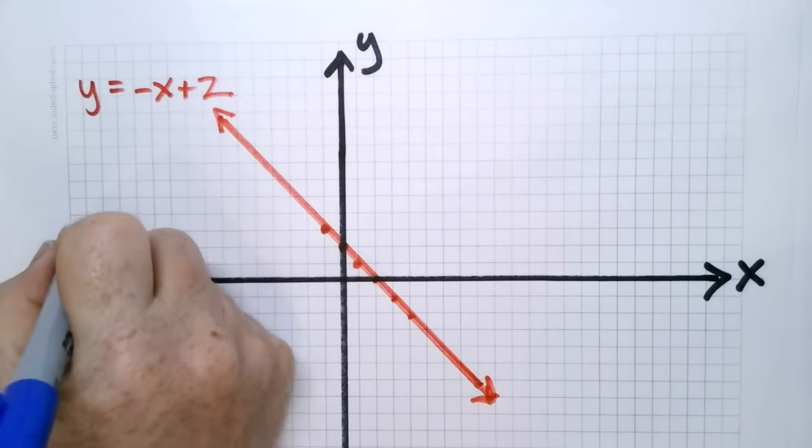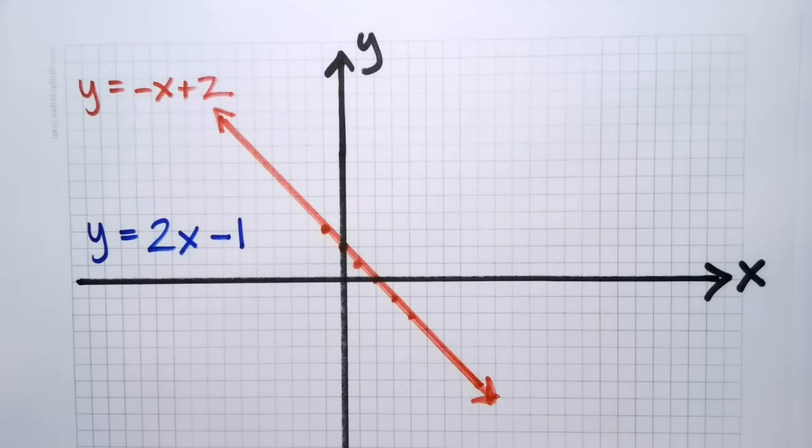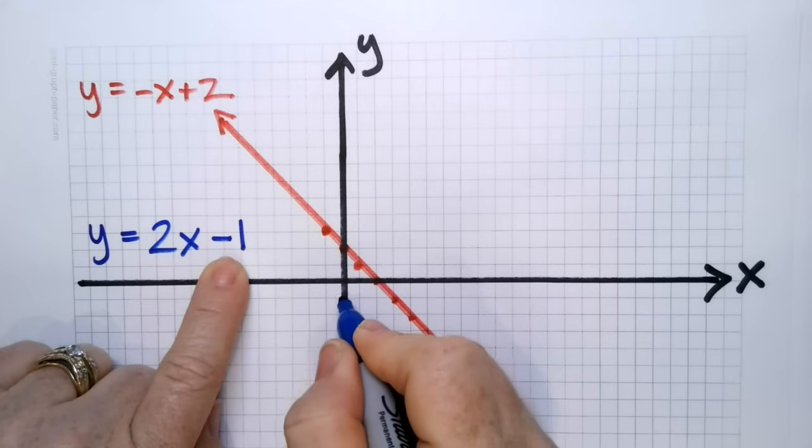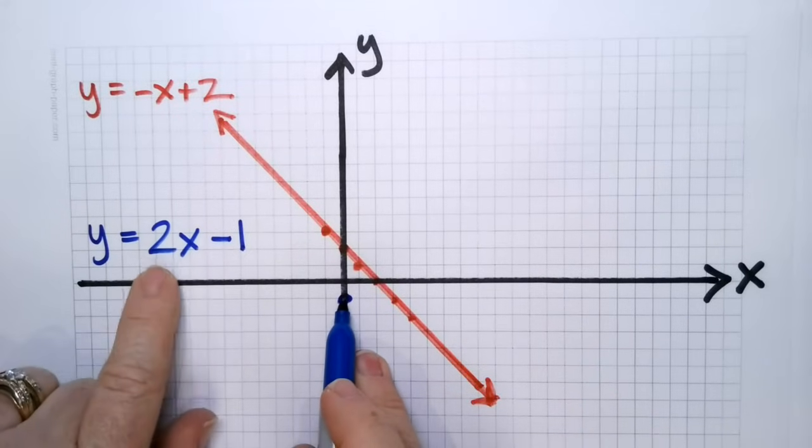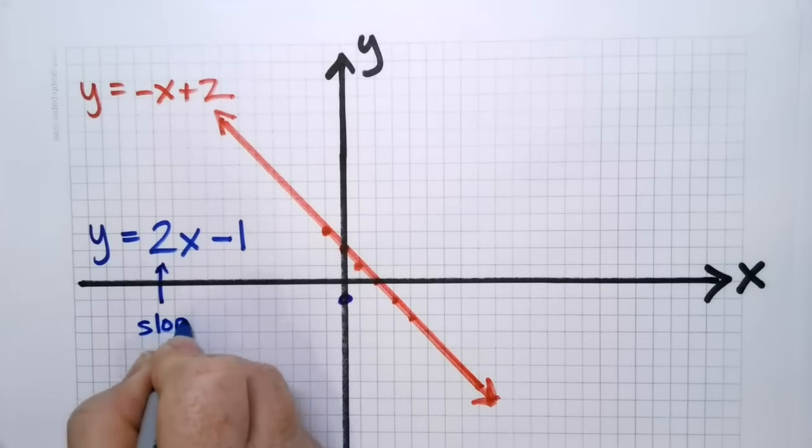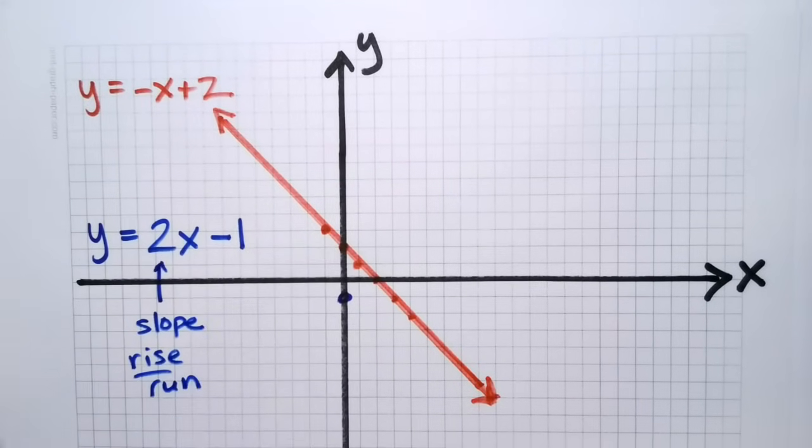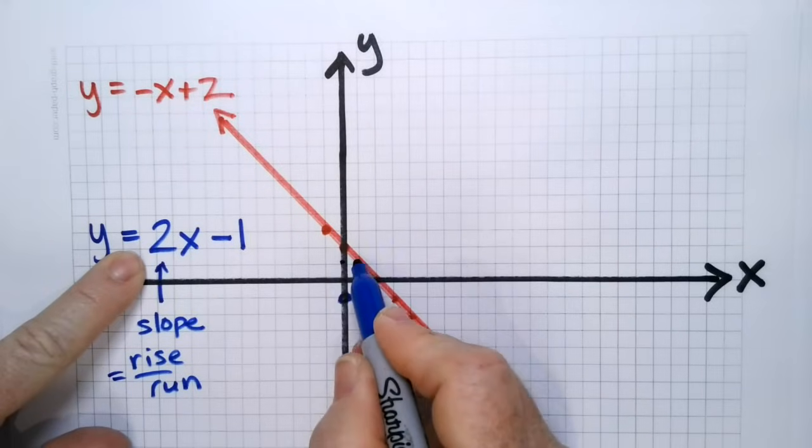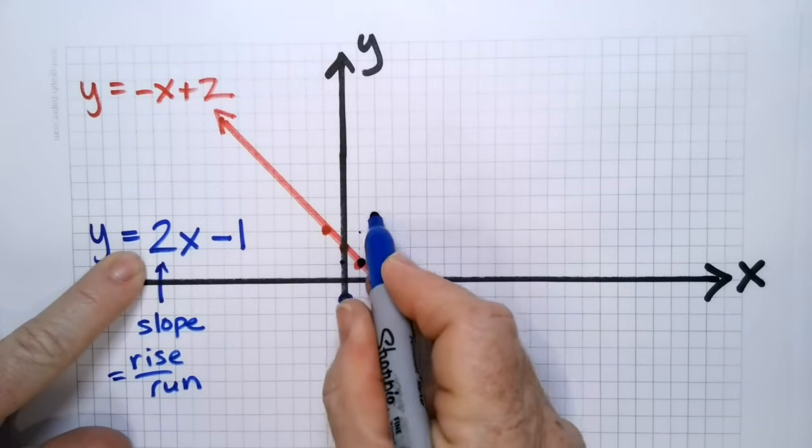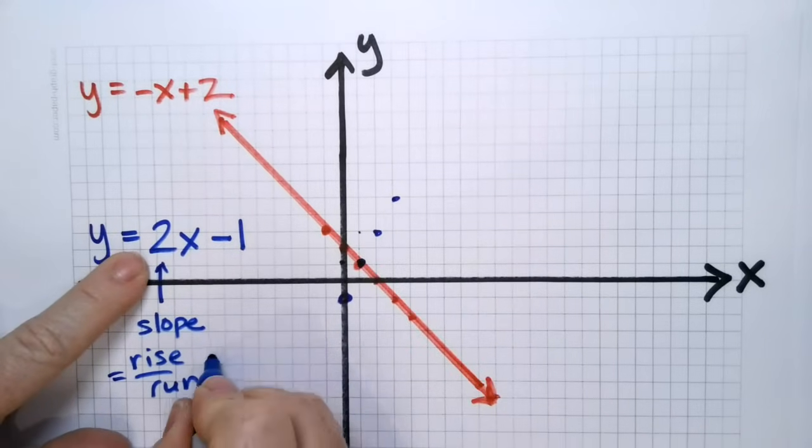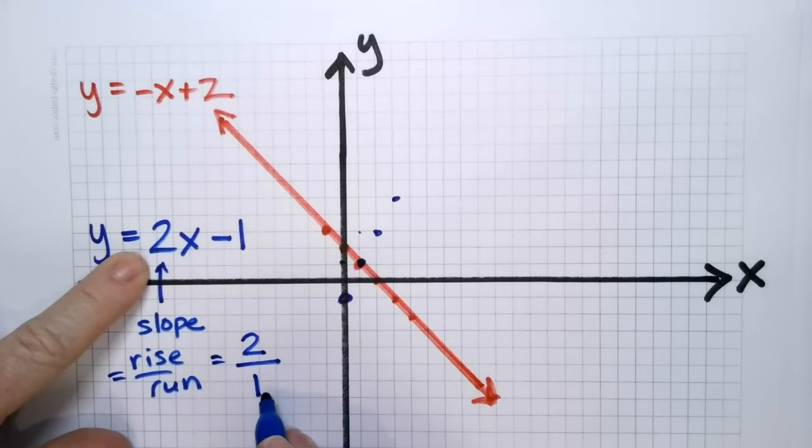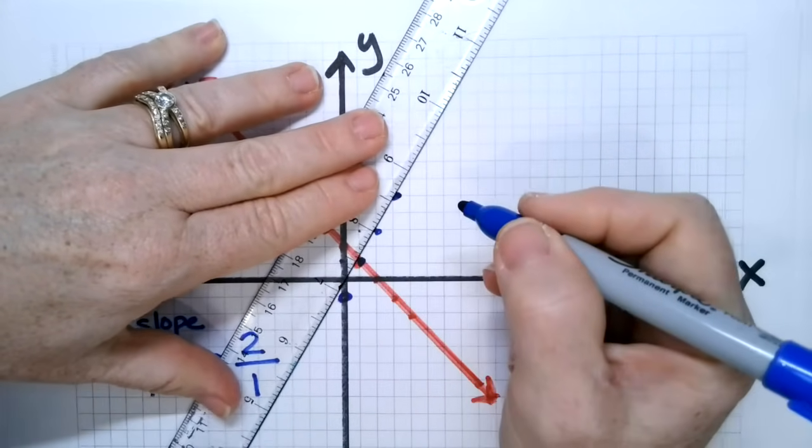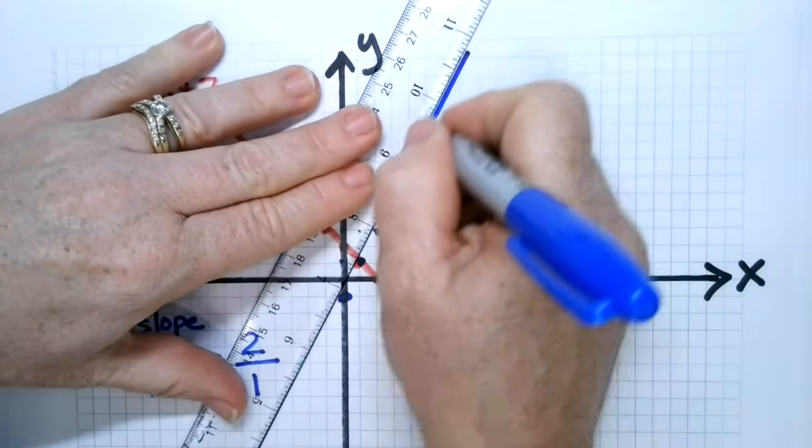Now we have another equation, y is equal to 2x minus 1. This was equation number 2. Let's do y equals mx plus b. The y intercept is minus 1, so for x is 0, y is minus 1, so it's right there. 2 is the slope, which is equal to rise over run. You're going to go up 2 and then over 1. Go up 2 and over 1, because 2 is the same as 2 over 1. Here is your second one.